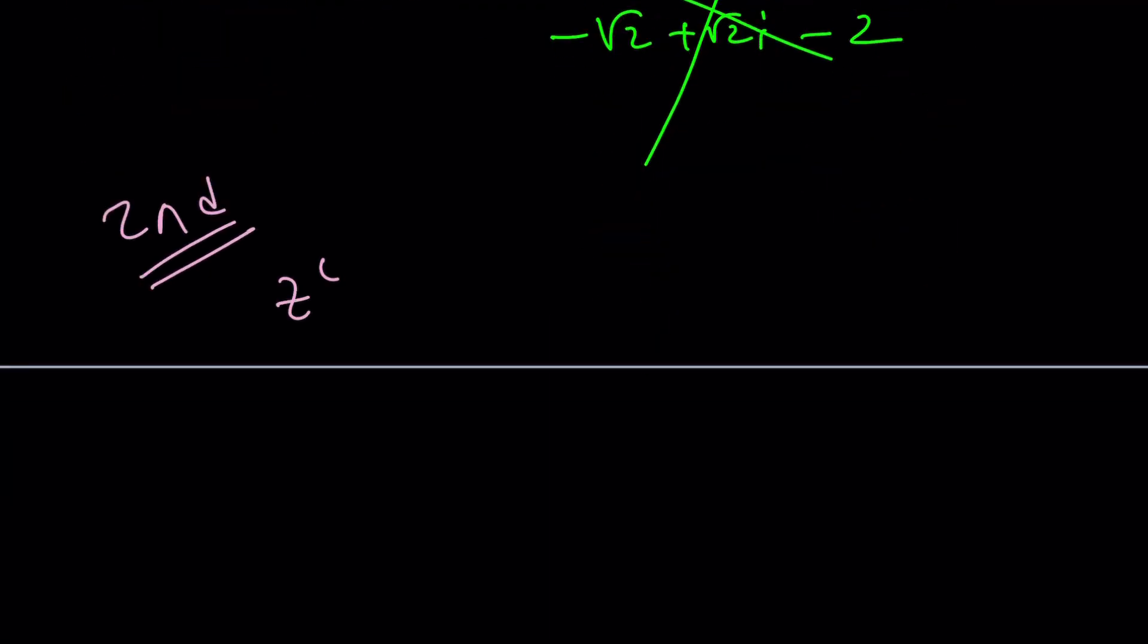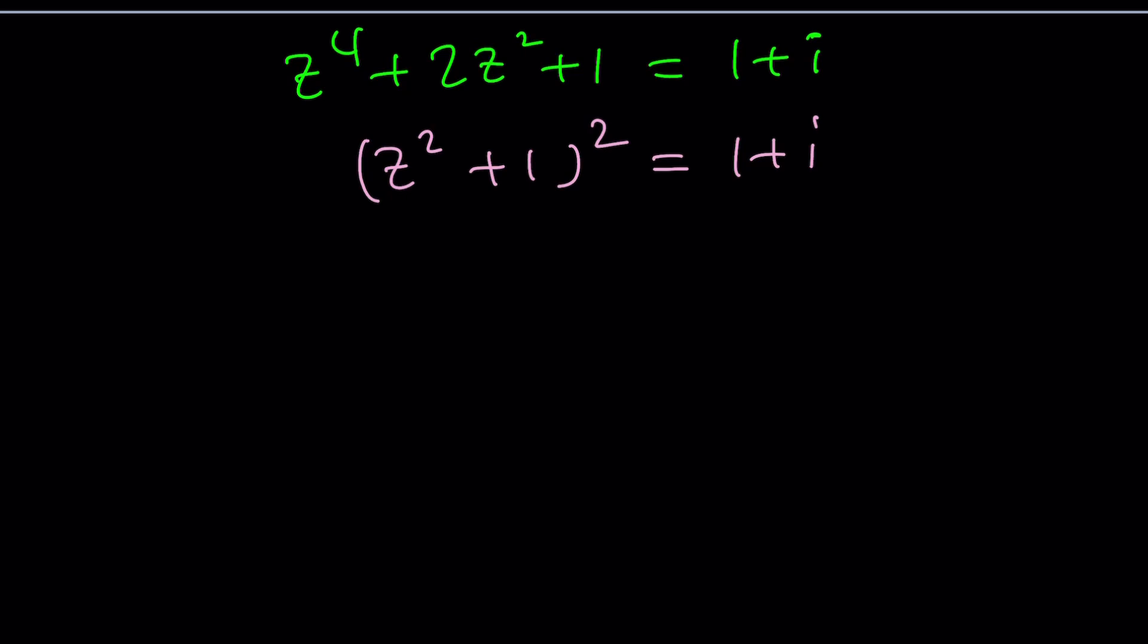Second method. Second method is, I don't know, it could be my favorite. Let me know what you think. I'm going to go ahead and add one to both sides. You know why? Because this becomes a perfect square.